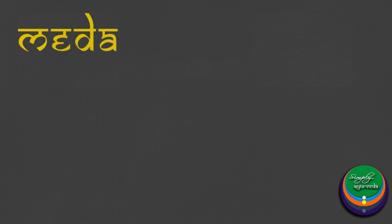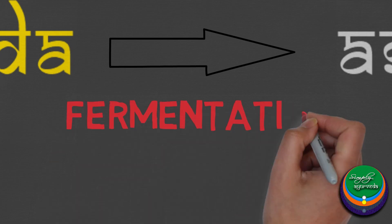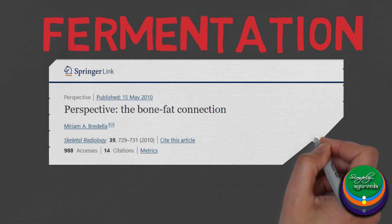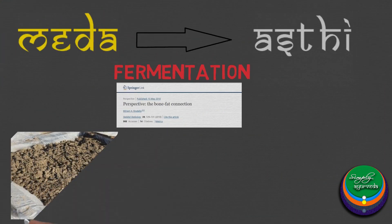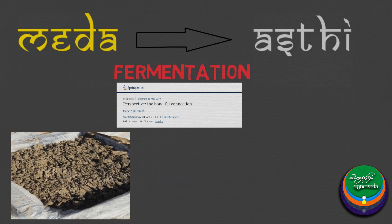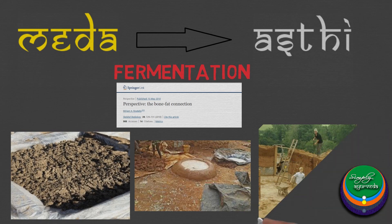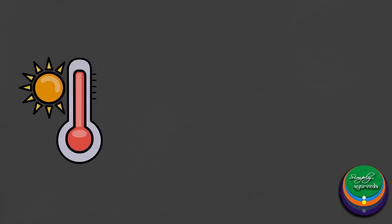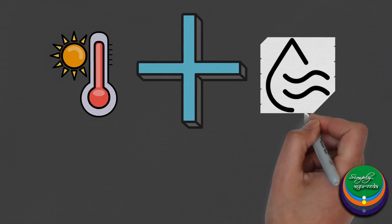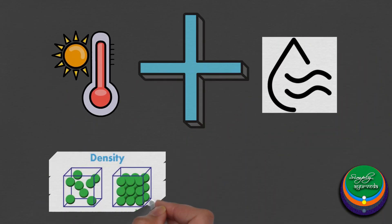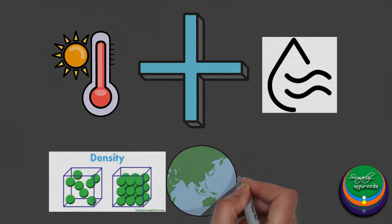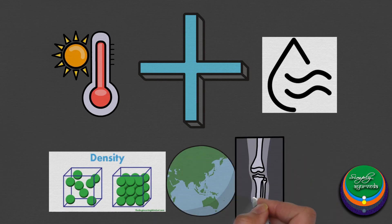The formation of Asthi has been again mentioned to be from Medhas. This transformation has been explained analogously to how the fermentation of soft clay or mud transforms it into compact cementing material. Hence, the action of Ushna of Agni and Vidukshana of Vayu on Medha can be said to cause fermentation and increase in density of Prithvi Bhava of Medhas to form Asthi dhatu.